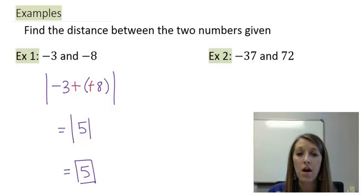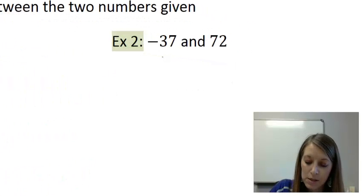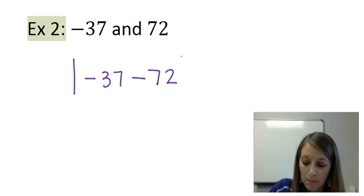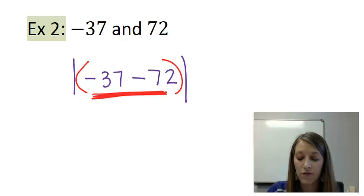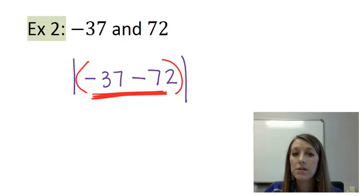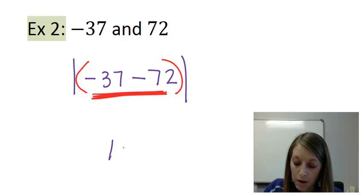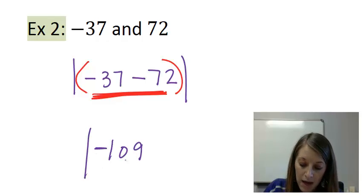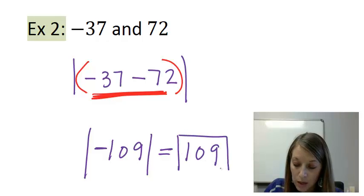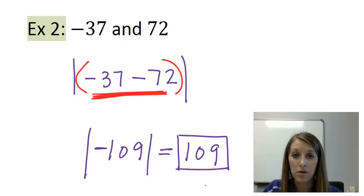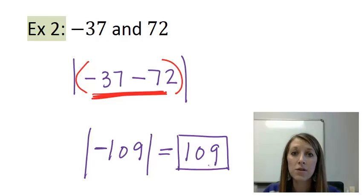Example 2: write the absolute value of one number minus the other in no particular order. Absolute value has hidden parentheses, so work the inside first and take the absolute value second. These two numbers have the same sign, so combine them and keep that sign: 37 plus 72 is 109, and they're both negative, so we have the absolute value of negative 109. Absolute value turns it into a positive number, so the distance between negative 37 and 72 is 109 units. This is exactly the kind of example where you wouldn't want to draw it on the number line, because these numbers are much farther apart.